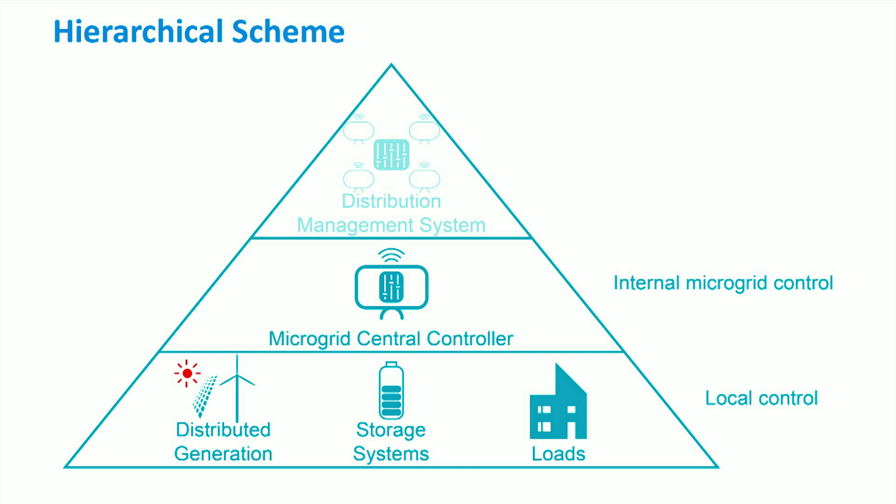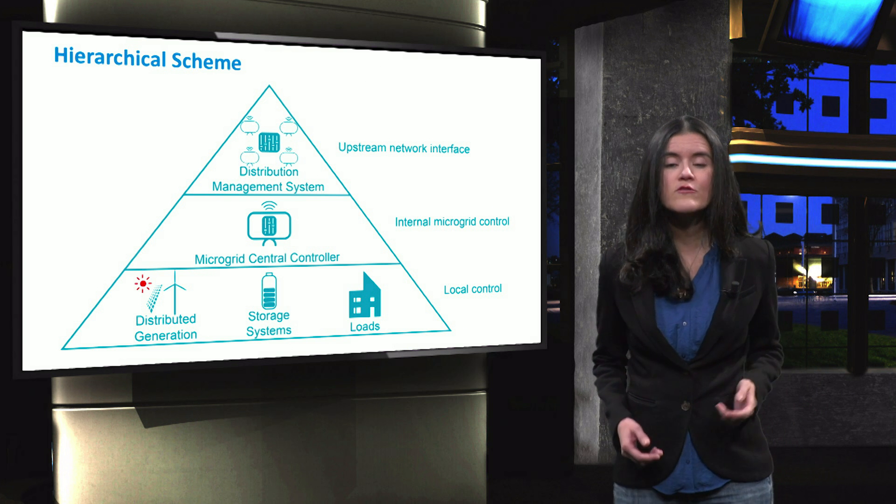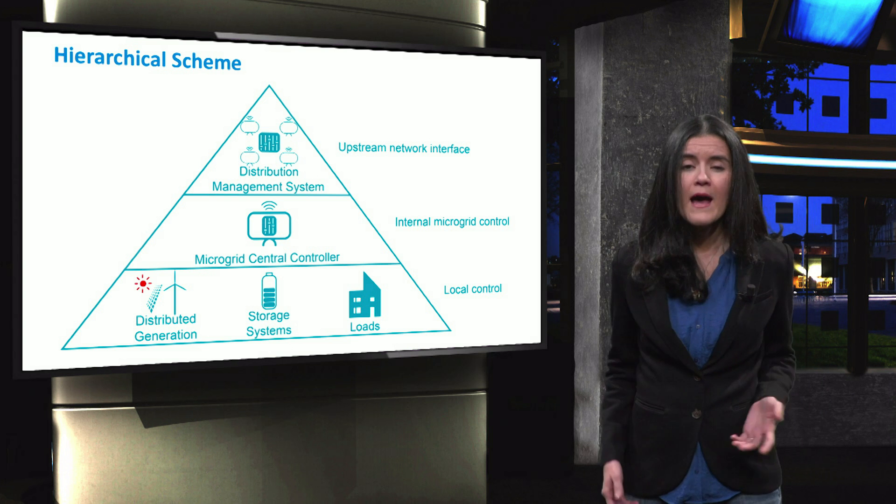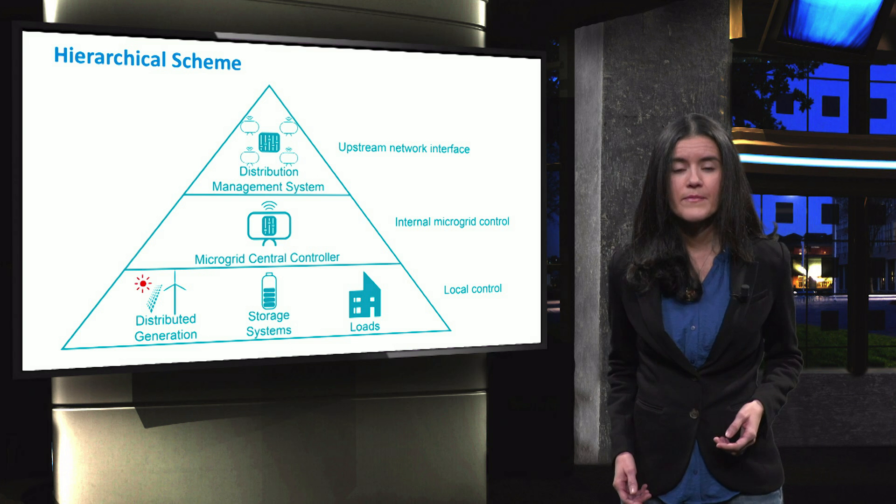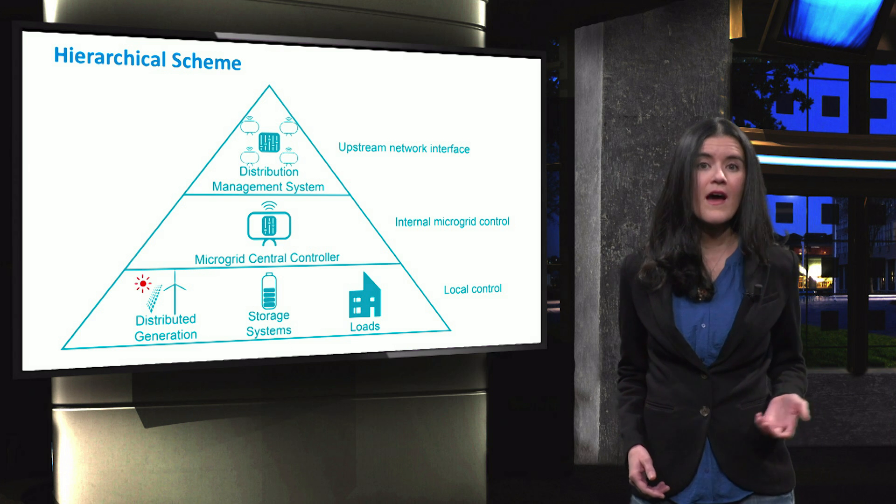At the second level, the microgrid central controller acts over the internal control. Here, the main goal is to adjust the reference points of the distributed generators in the microgrid. Also, the internal control manages synchronization between the microgrid and the external grid. When the microgrid is in grid-connected mode, at the top level, we find the upstream control. The distribution management system is responsible for this control level and it mainly addresses the exchange of power between the microgrid and the external grid, taking into account electricity market and regulatory signals.